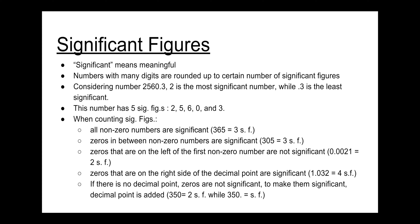Zeros that are on the left of the first non-zero number are not significant. For example, 0.0021 has only two significant figures because all the zeros before 2 do not count as significant.